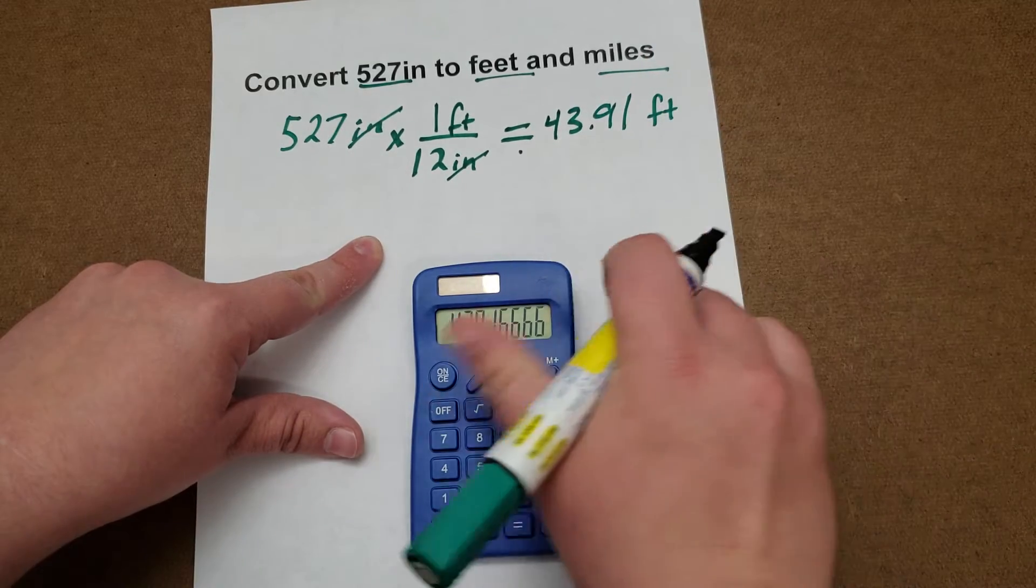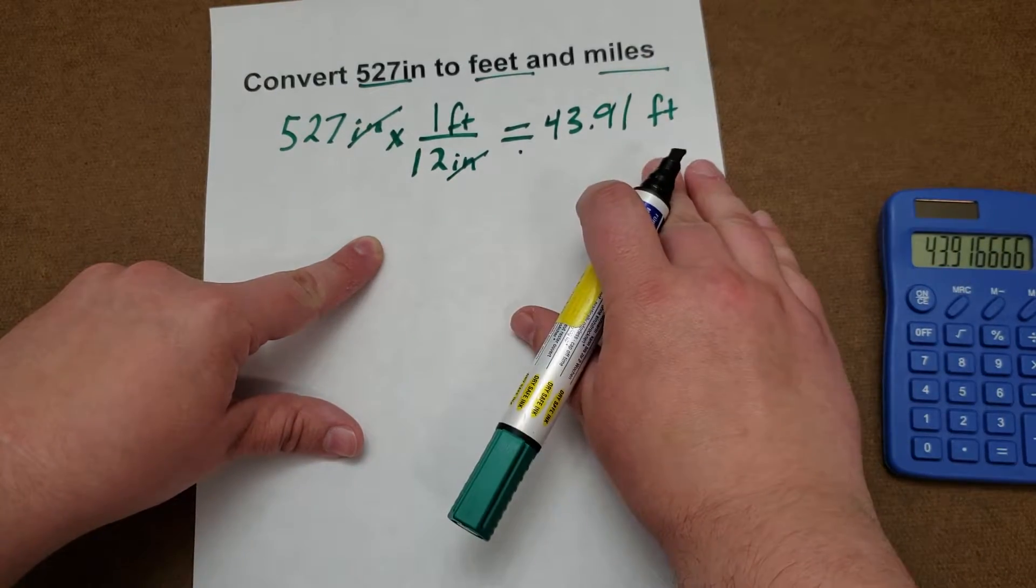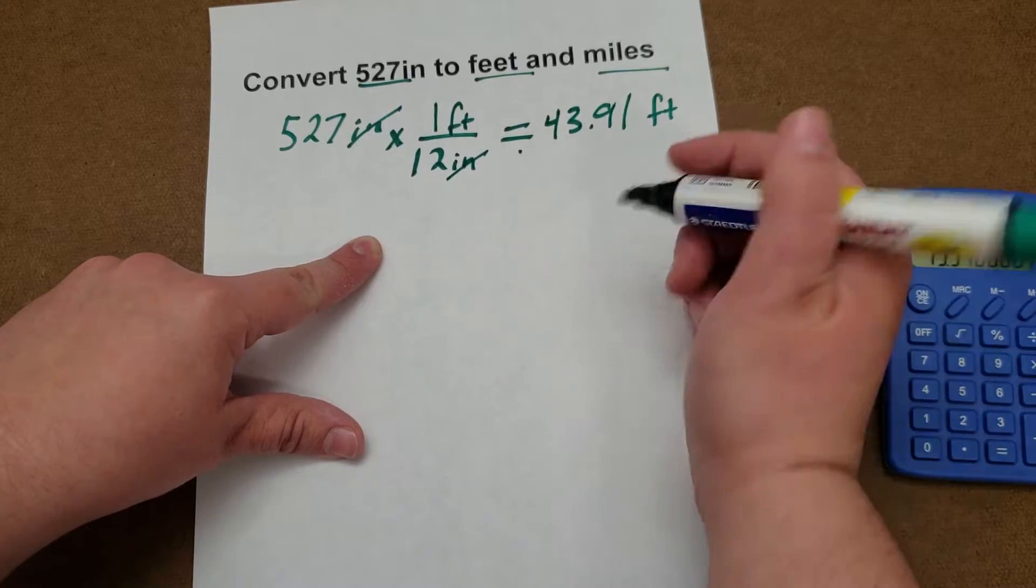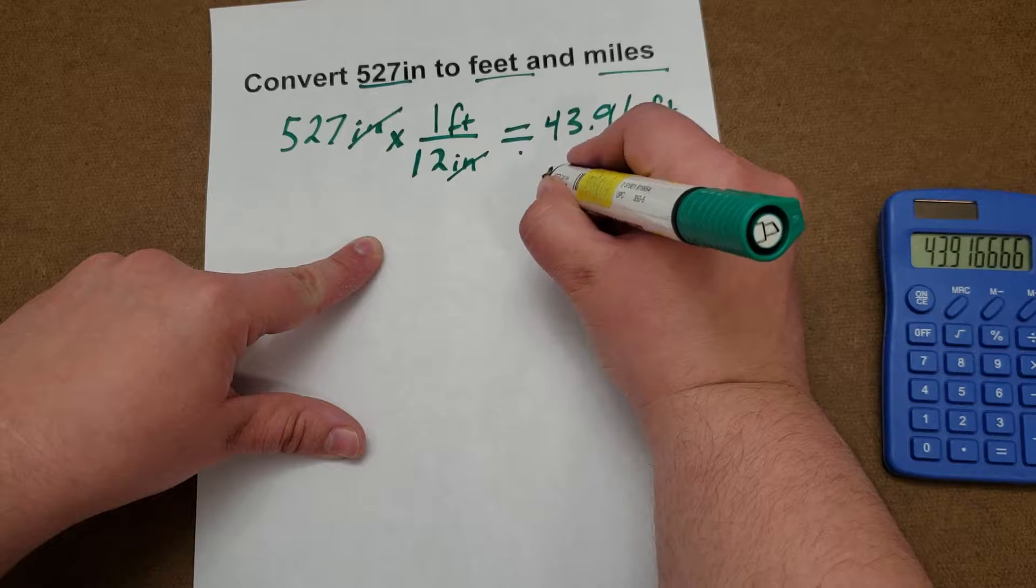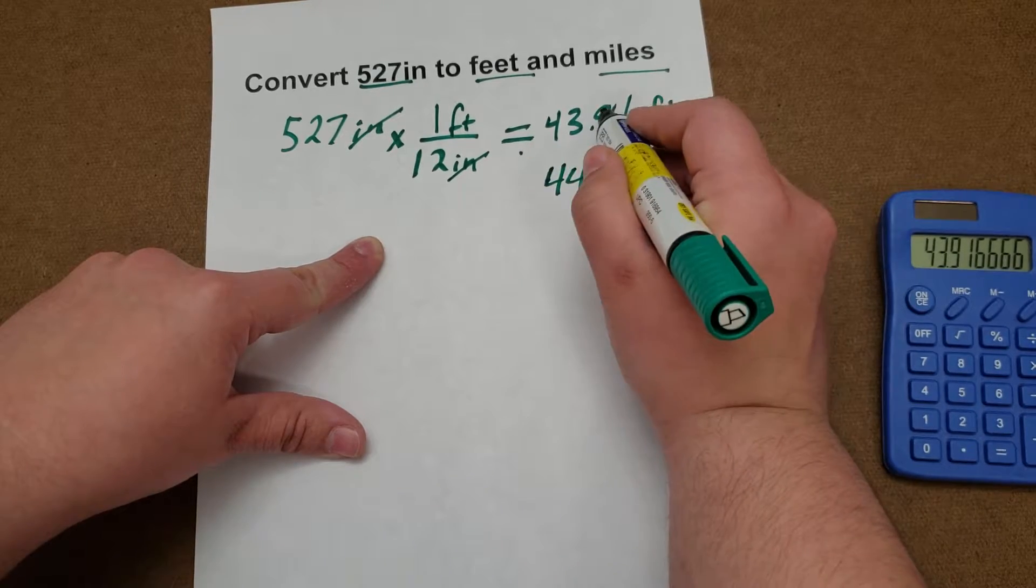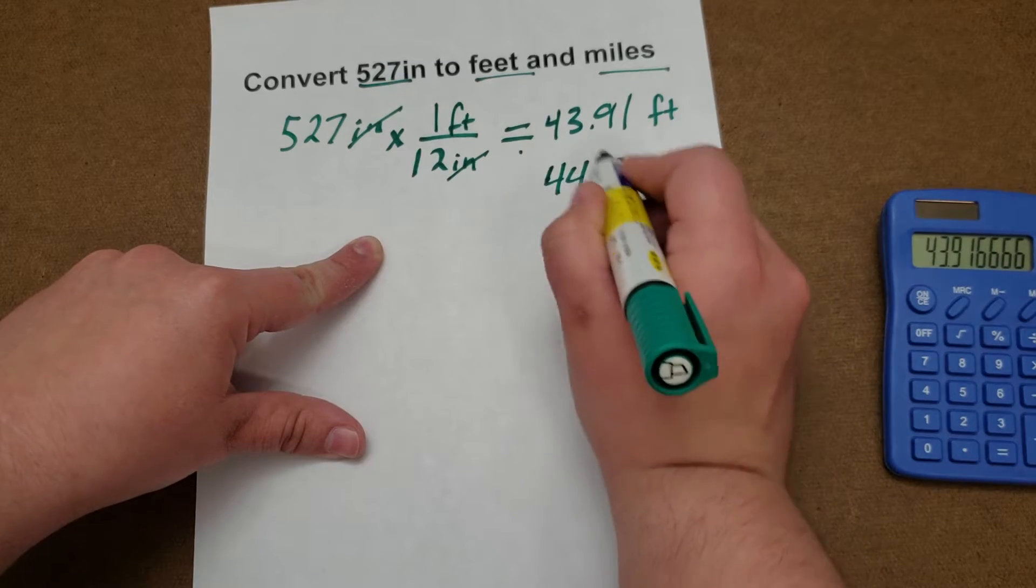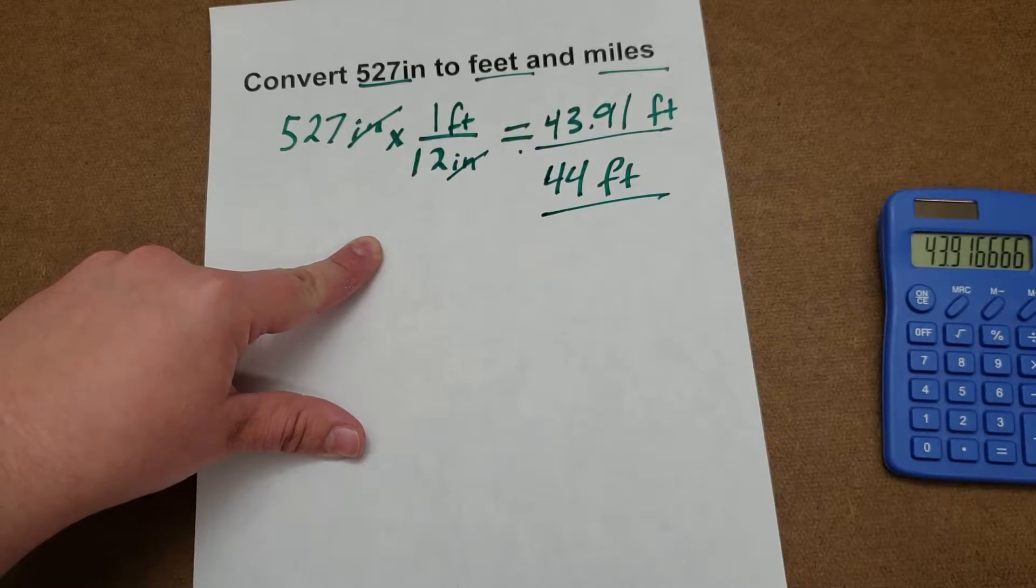Also, depending on how the test is, whether it's free response or if it's multiple choice, the answer could also be 44 because rounding this up could be acceptable. So both of these answers are correct.